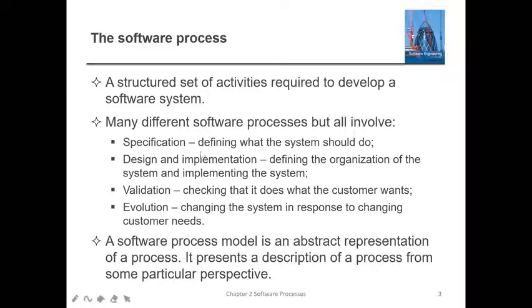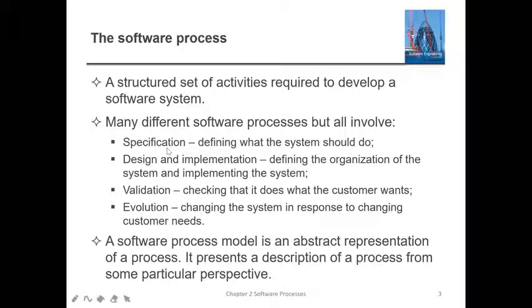Some examples of software processes are: specification, design and implementation, validation, and evolution. Specification means defining what the system is going to do. Once you have decided the specification, the next step is design and implementation — putting the activities in a design or flowchart manner.